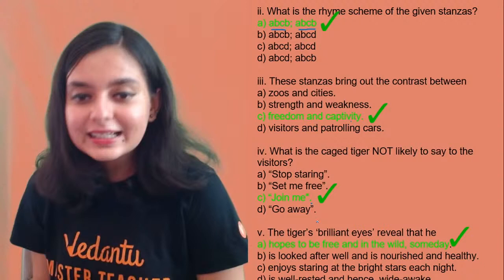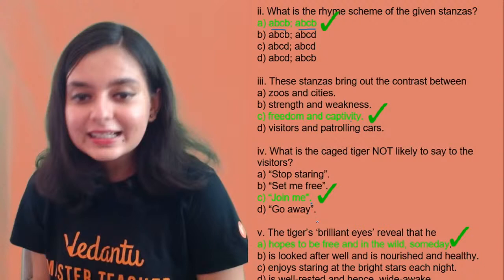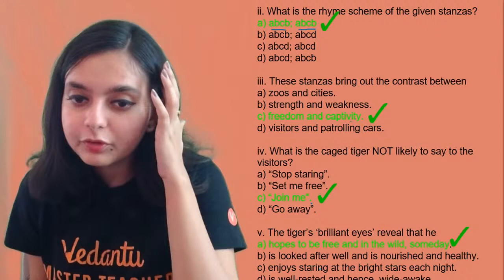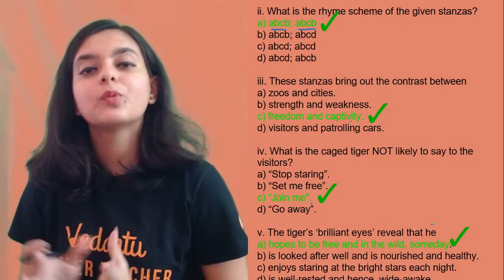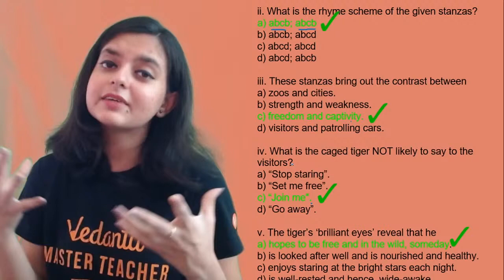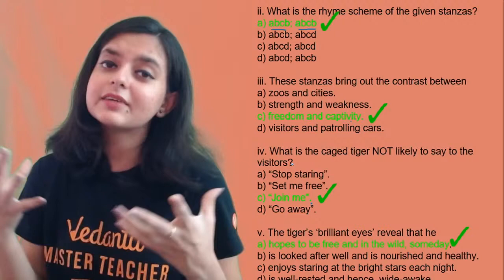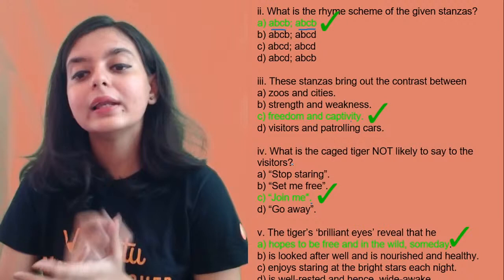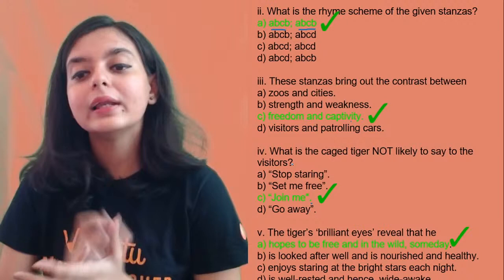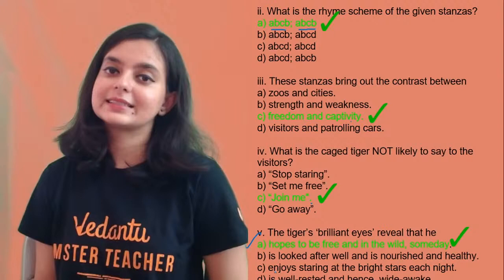The tiger's brilliant eyes — this is an important question, most of you were confused between A and C. The tiger's brilliant eyes reveal that he hopes to be free in the wild. When he was looking at the stars with his brilliant eyes, he was hoping to be free. The stars connected between his homeland and his present artificial existence. What he longed for was to go back to the wild and carefree atmosphere. Therefore, the first option is correct.